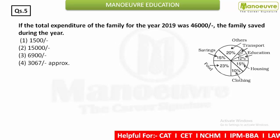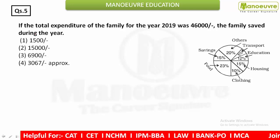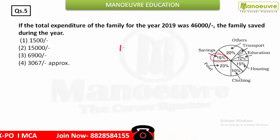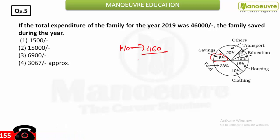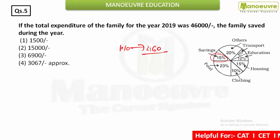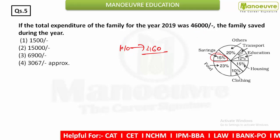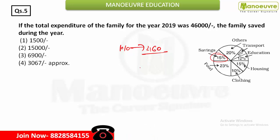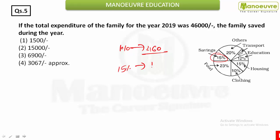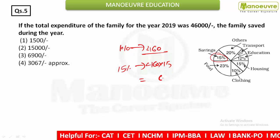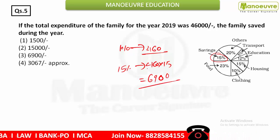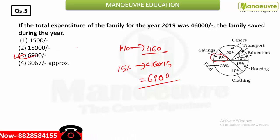If the total expenditure of the family was 46,000, how much did the family save during the year? The saving is 15%. We know 1% equals 460, applying the unitary method. So multiply 460 by 15: 460 × 15 equals 6,900. That is option 3.